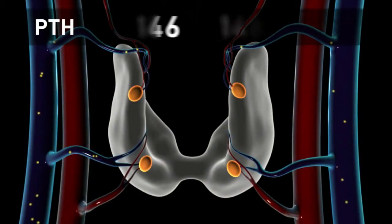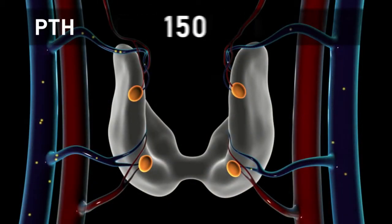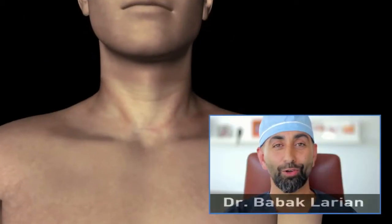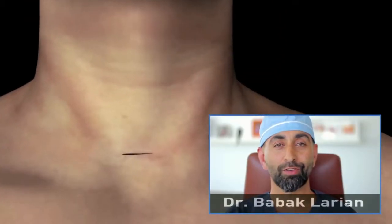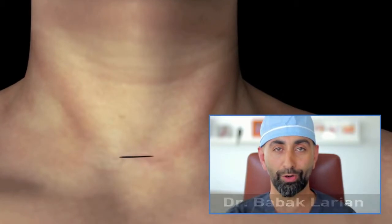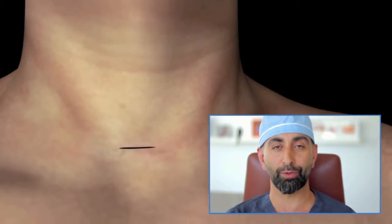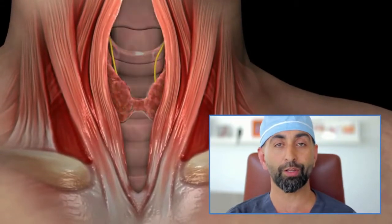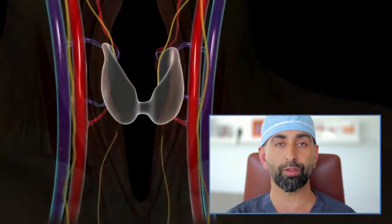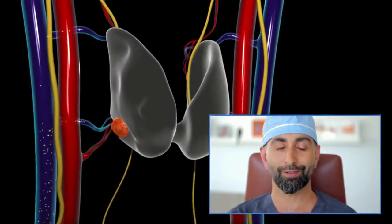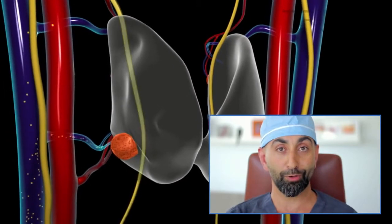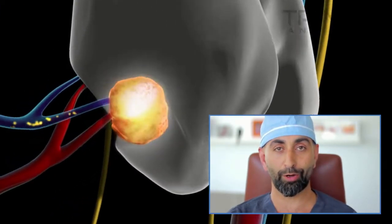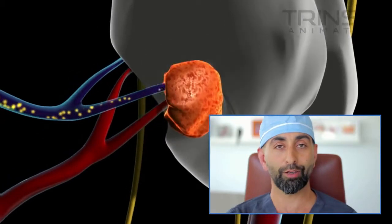Next, intraoperative PTH testing is done to measure the starting amount of parathyroid hormone. We begin by making a small incision in a skin crease in the lower neck, usually less than two centimeters. We separate the muscles over the thyroid, expose the thyroid, and go to the side of the enlarged abnormal parathyroid gland. We then find and protect the recurrent laryngeal nerve.